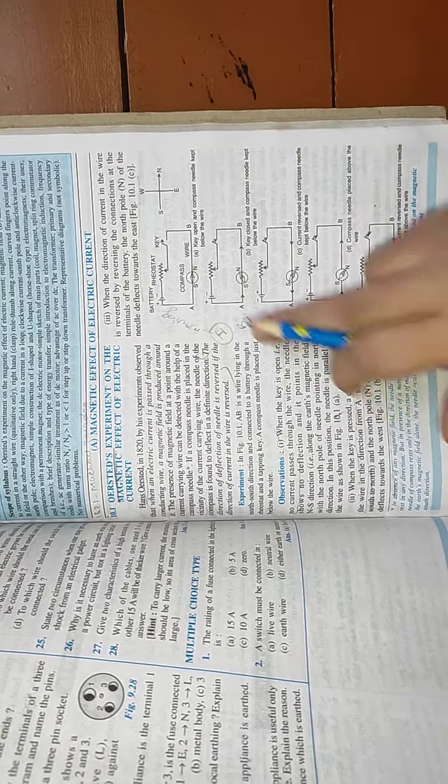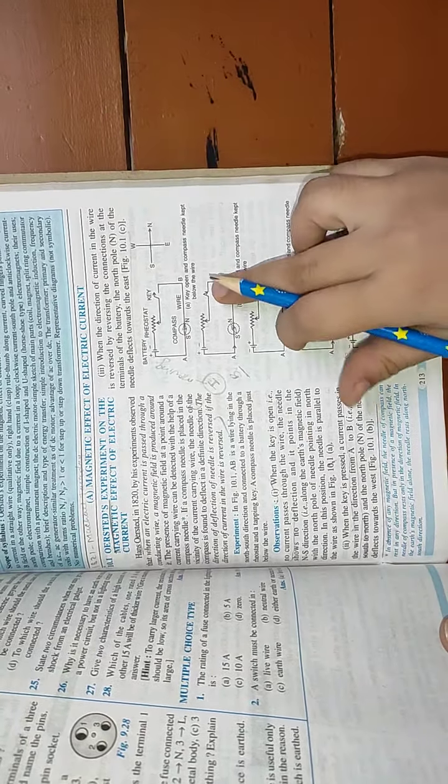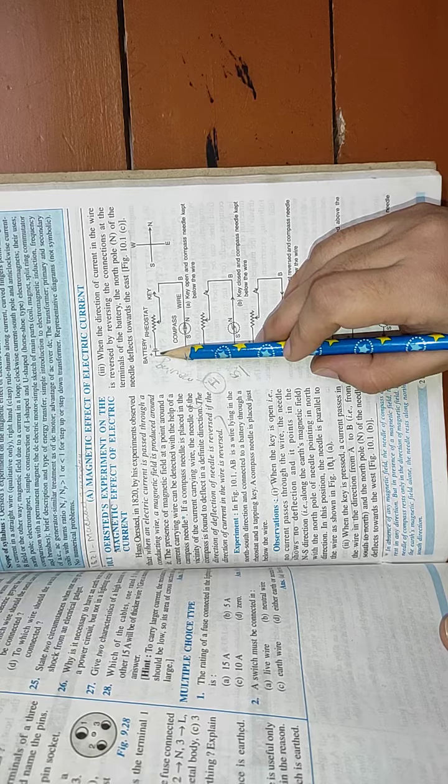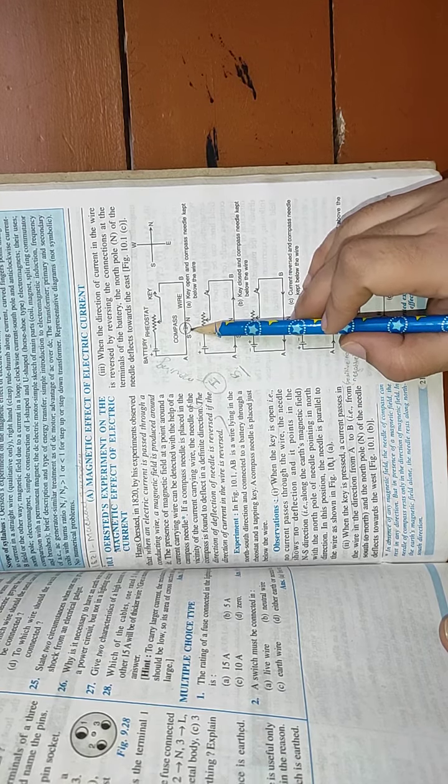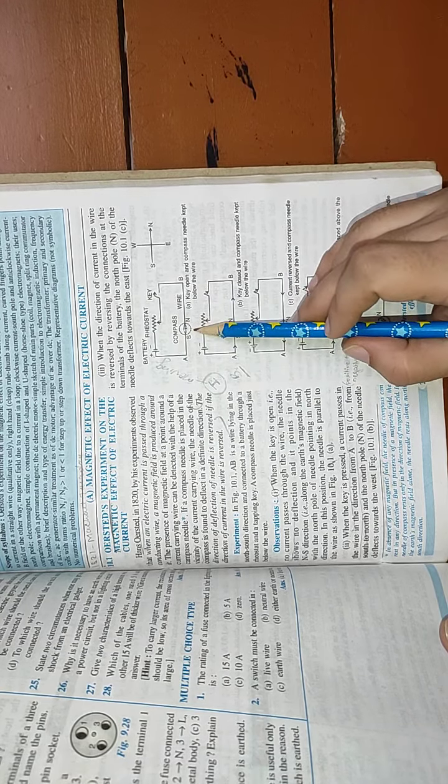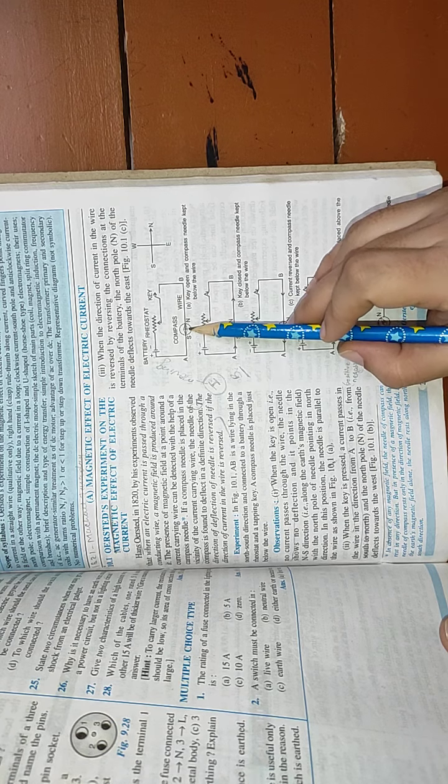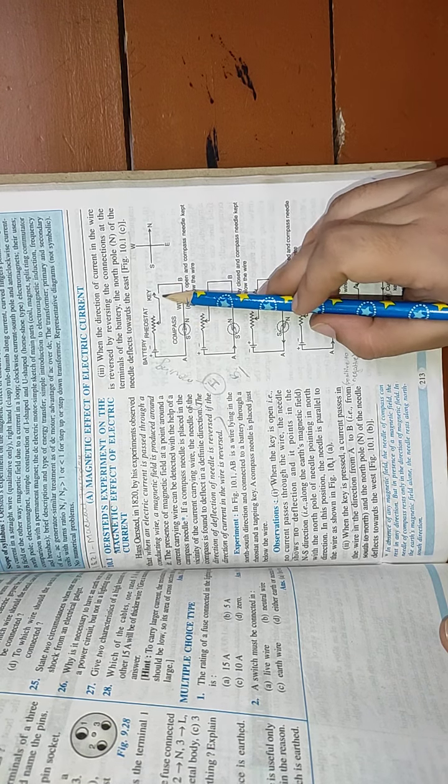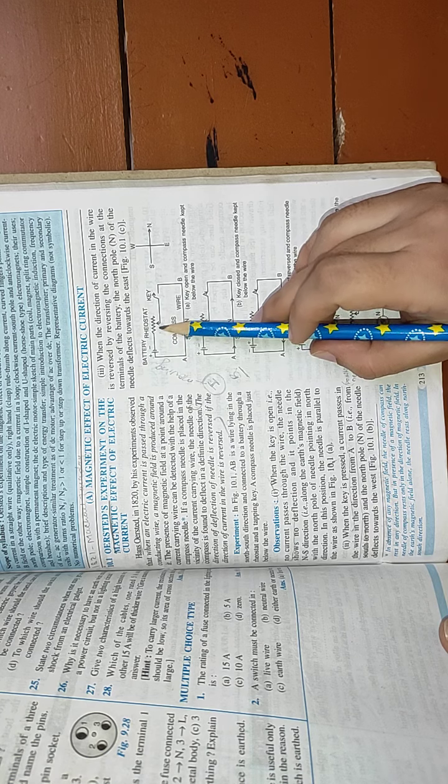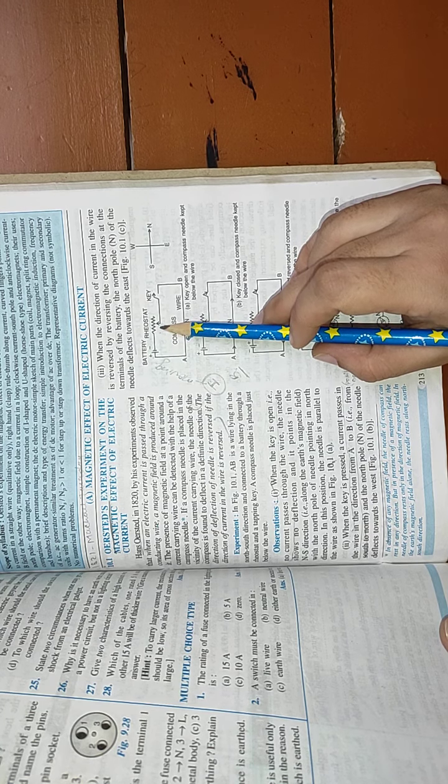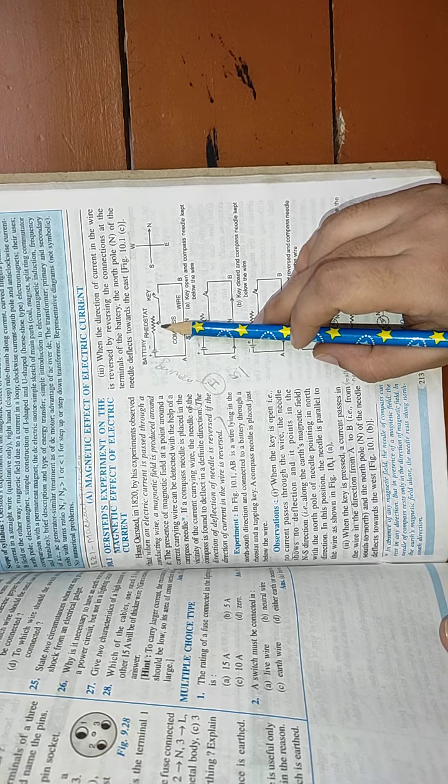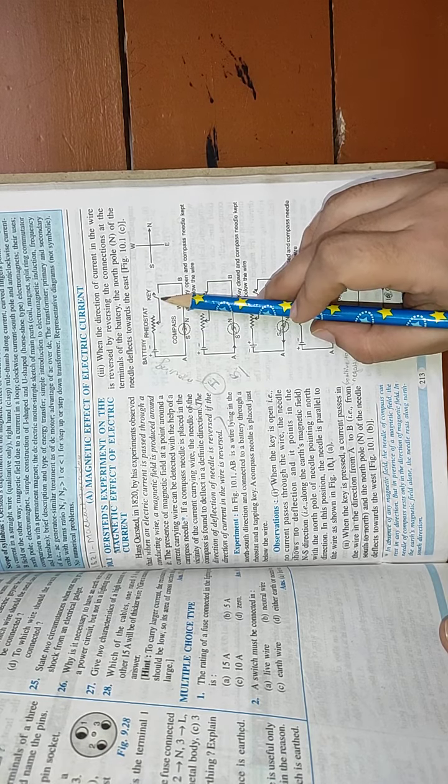So there is an experiment to demonstrate it. Here you can see a battery is there, then this conducting wire is there, and below this conductor or below this wire is the compass needle. Then a key, a rheostat. A rheostat is used to vary the resistance or to change the resistance anytime. Then key here is open.